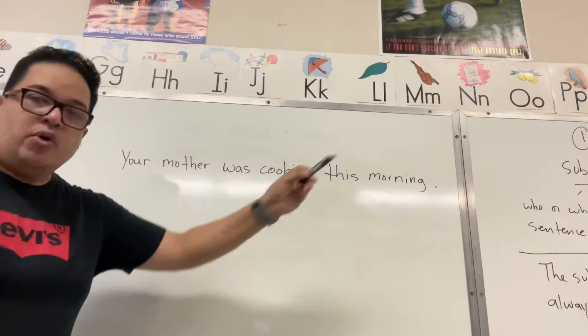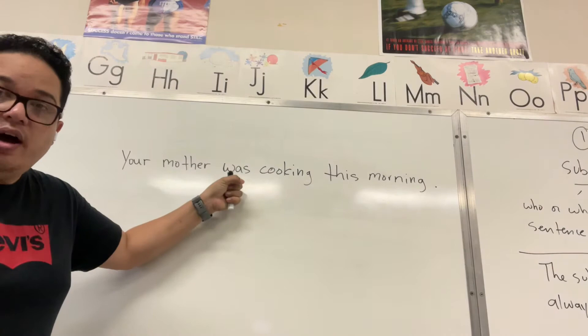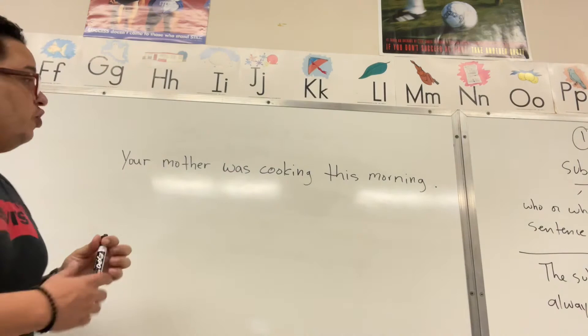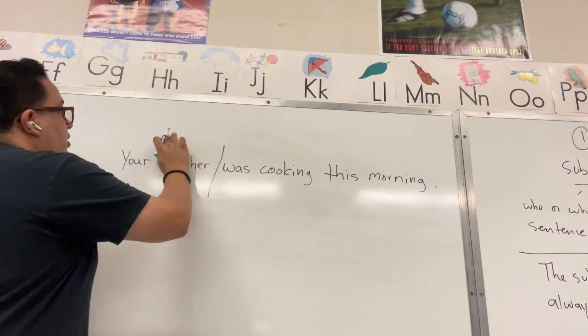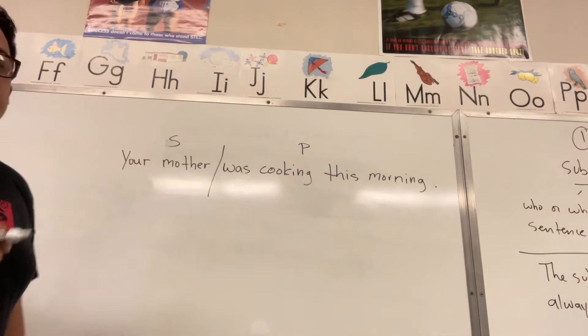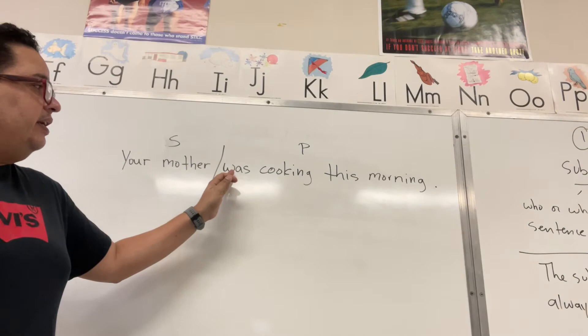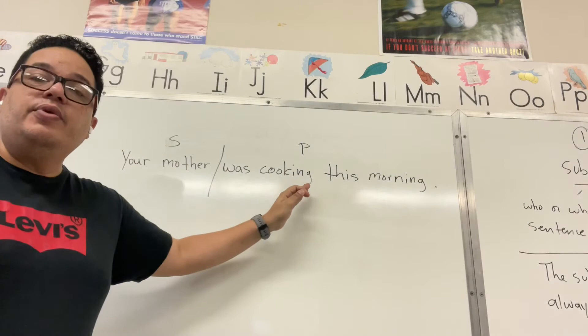The first thing we do is always look for the verb. And we have 'was.' The predicate always begins with a verb. So 'was' — we divide the sentence here. This is your complete subject. This is your complete predicate. Now, either the predicate will be 'was' as a linking verb, or 'was' included with another action verb, and it becomes a helping verb.